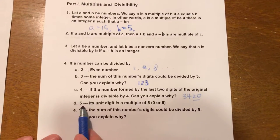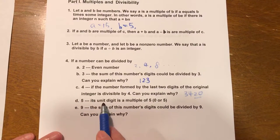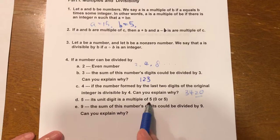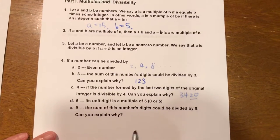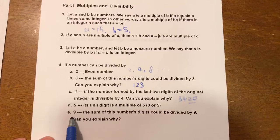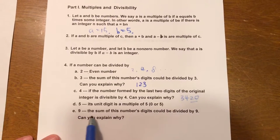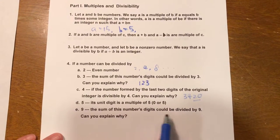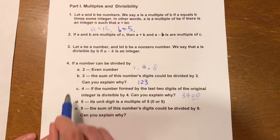Any number can be divided by 5 if its unit digit is a multiple of 5 or 0. Any number can be divided by 9 if the sum of this number's digits could be divided by 9. This is similar to B.